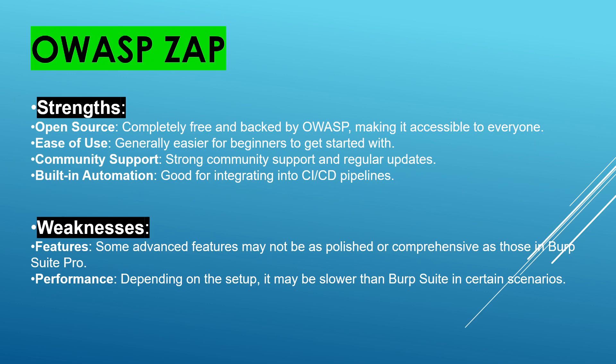Coming to the OWASP ZAP tool, the strengths are it's open source and it's completely free. The add-ons are completely free and it's accessible to everyone, and easy to use for beginners to get started with — a fantastic tool. And coming to the community support, it has very strong community support and regular updates. A very good feature is built-in automation, and it has good integration with the CI/CD pipeline.